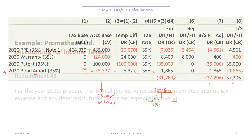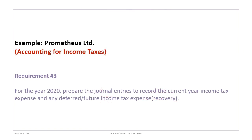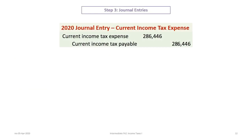The next requirement is to prepare journal entries to record the current income tax expense and any deferred or future tax expense or recovery. We have two journal entries. For the current income tax expense, we debit current income tax expense for $286,446 and credit income tax payable for $286,446.